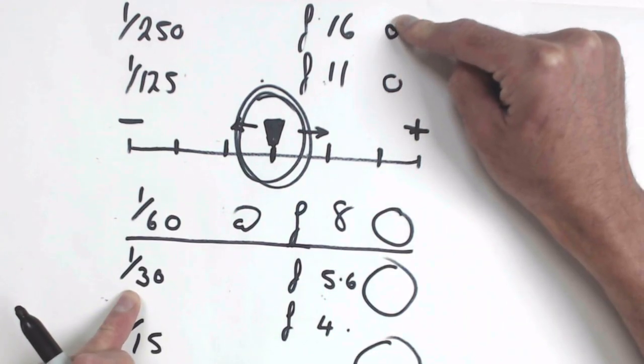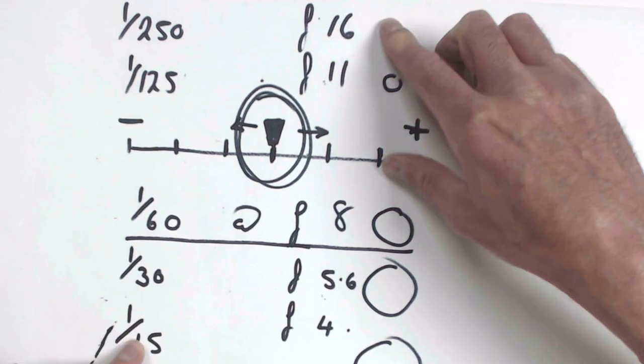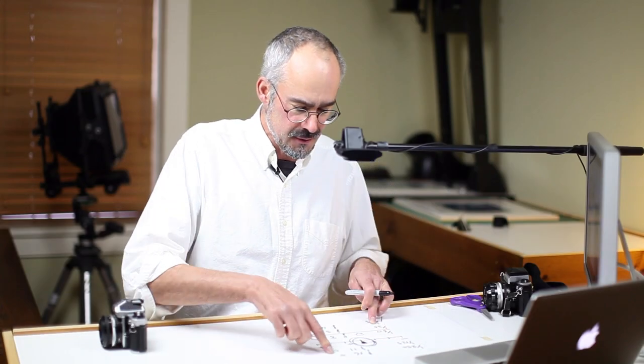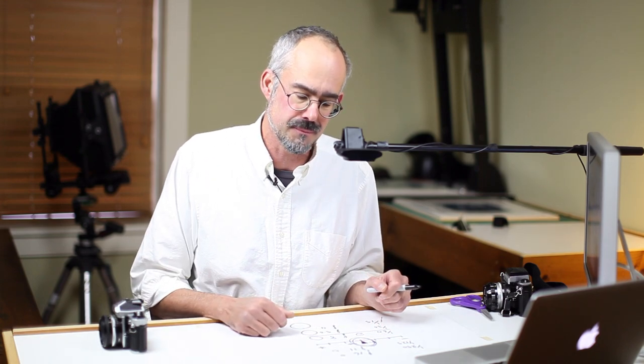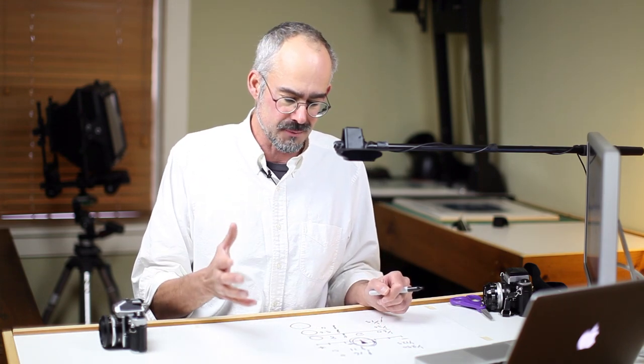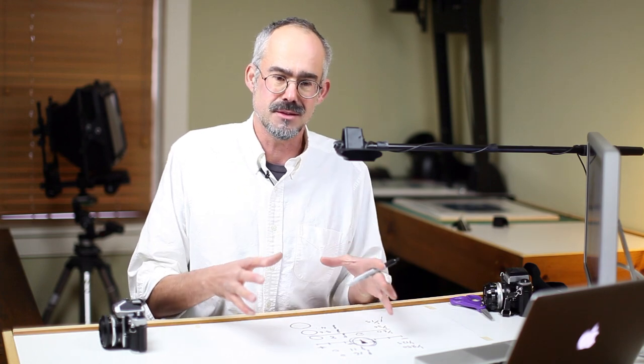If you reduce it further, you can increase the shutter speed to compensate. So, you should see with those settings, the marker staying in the middle. Try this experiment. See how you get on.